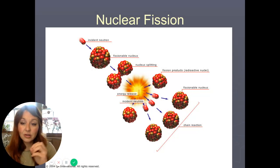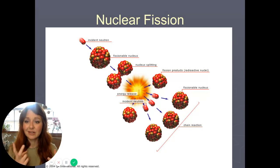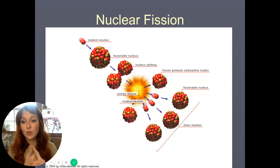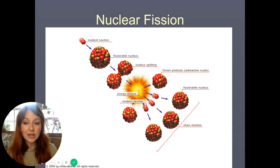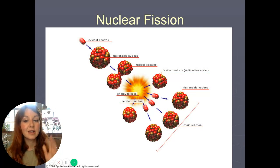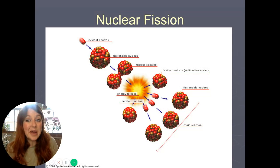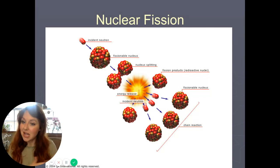A nuclear fission chain reaction can really go two ways: it can be slowed down and controlled, which is how we utilize it for electrical energy generation — I'll show you how that works in a minute — or it makes a bomb. It explodes and creates a giant mushroom cloud.